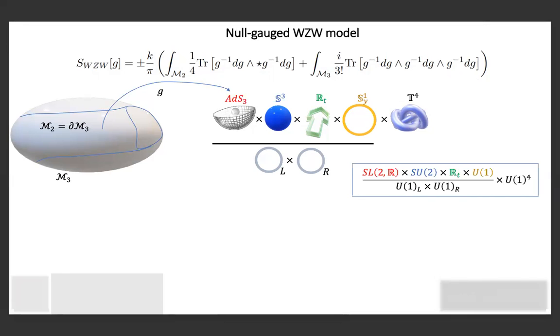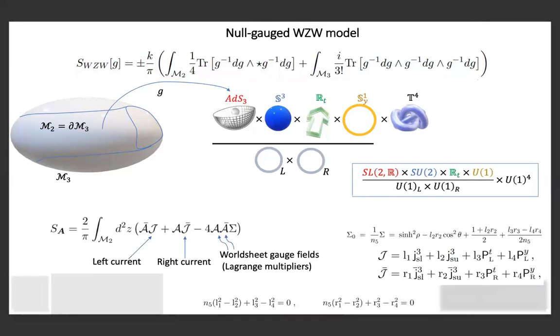When you do the gauging, you introduce gauge fields and these gauge fields talk with the currents. The currents on the right are expressed in terms of coefficients l1, l2, l3, l4, which are just numbers. These numbers are really important—I'm going to highlight this because it's a really important thing. If you integrate out the gauge fields because they're Lagrange multipliers, you get the next slide.